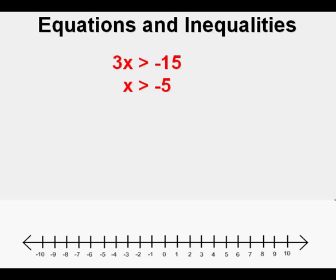Now here's where the difference between equations and inequalities starts. Instead of the solution being a point, the number — in this case negative 5 — becomes not a point but a boundary point. There are two different types of boundary points. The solid boundary point applies to the greater than or equal to symbol and the less than or equal to symbol. The greater than or less than symbols have their boundary point represented by an open circle, meaning that although the point is the boundary point, the point itself is not part of the solution set.